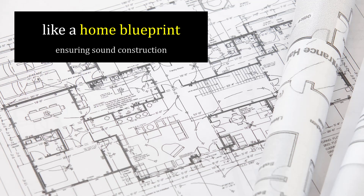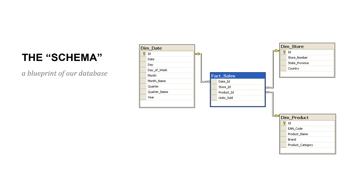The way you can think about this is like a home blueprint. We might put a blueprint together as we're building a home to make sure we have sound construction, where we can make adjustments if needed, and so everyone knows what the home is going to look like and can all work together. The term for our blueprint in the case of our data is the schema. This is a simple example of a schema where you've got a few tables, and it shows the relationship between those tables that are going to exist in the database. So our schema is our blueprint.